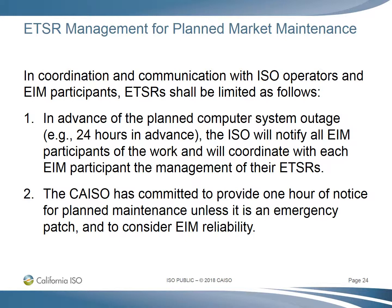In coordination and communication with ISO operators and EIM participants, ETSRs shall be limited as follows during planned market maintenance. In advance of the planned computer system outage — for example, 24 hours in advance — the ISO will notify all EIM participants of the work and coordinate with each EIM participant the management of their ETSRs. The California ISO is committed to provide at least one hour of notice for planned maintenance unless it is an emergency patch, and to consider EIM reliability.